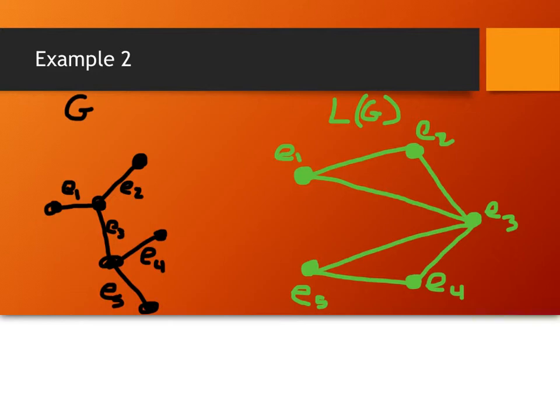Notice something about graphs and line graphs: in the original graph we had these nice cycles, but in the line graph we didn't have anything like that — it never came back and rounded on itself. So you don't always get a nice one-to-one correlation between a graph and a line graph.